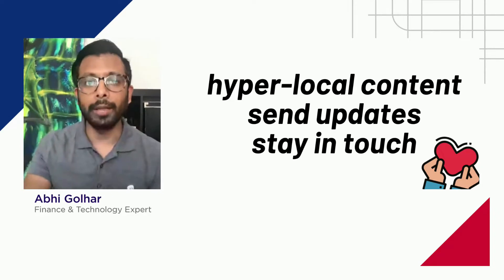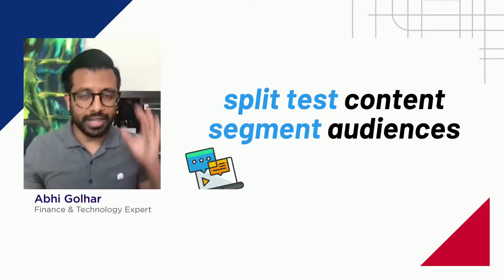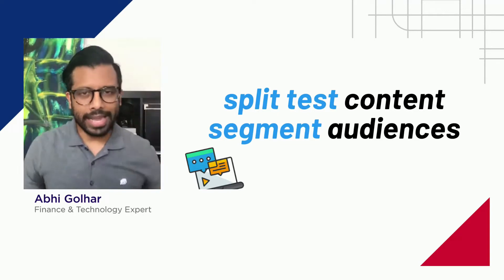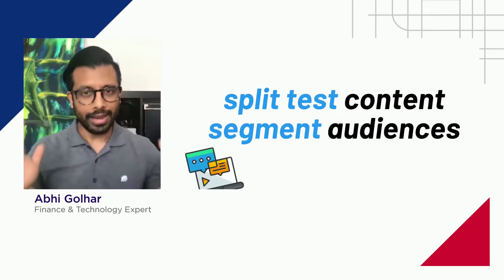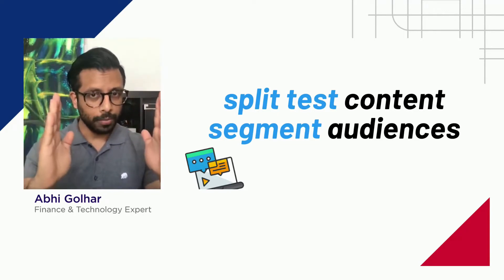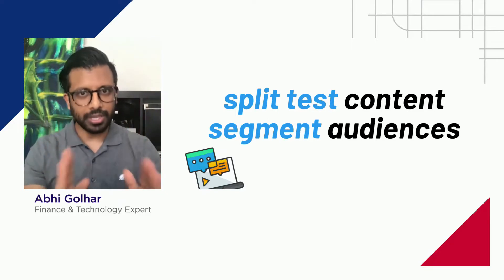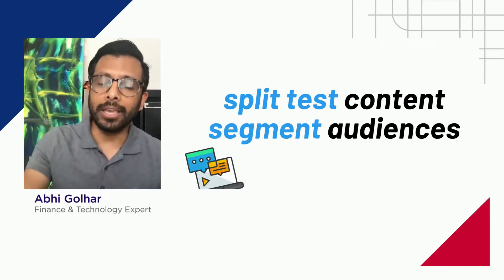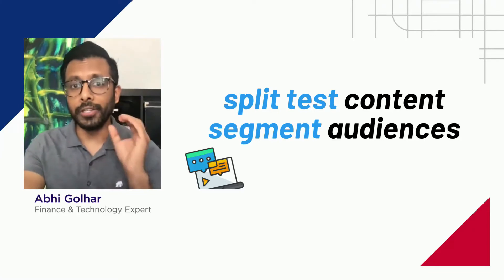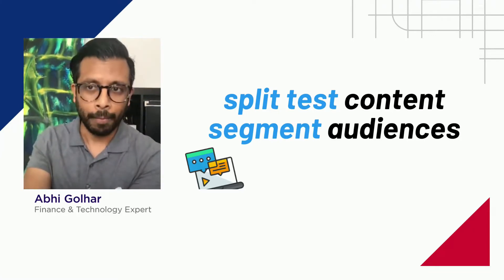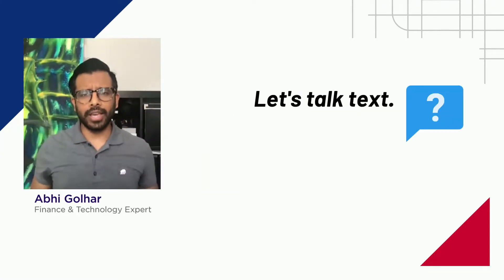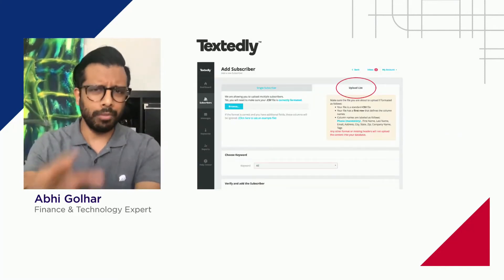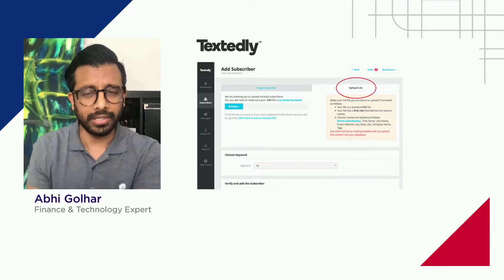Hyper-local is the key word here. I want to split test that content — we talked about how Amy is client A and Avi is client B and how both folks need specific personalized content. We can also segment our audiences, and you can do this within Zap CRM. Let's talk about text for a second, because it makes a lot of sense.